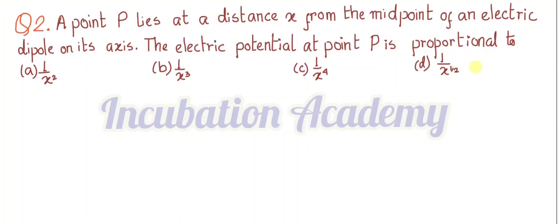Welcome everyone. This is a BCBC previous year question from 2023 — the second question of that paper. A point P lies at a distance x from the midpoint of an electric dipole on its axis. The electric potential at point P is proportional to — four options are given: option A is 1/x², option B is 1/x³, option C is 1/x⁴, and option D is 1/x^(1/2) or 1/√x.